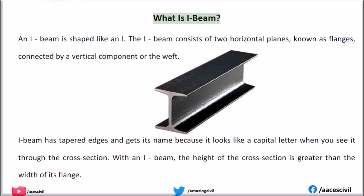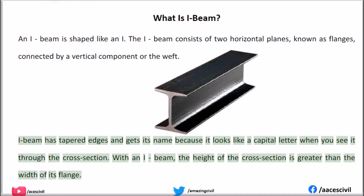What is I-beam? An I-beam is shaped like an I. The I-beam consists of two horizontal planes, known as flanges, connected by a vertical component or the web. I-beam has tapered edges and gets its name because it looks like a capital letter I when you see it through the cross section. With an I-beam, the height of the cross section is greater than the width of its flange.